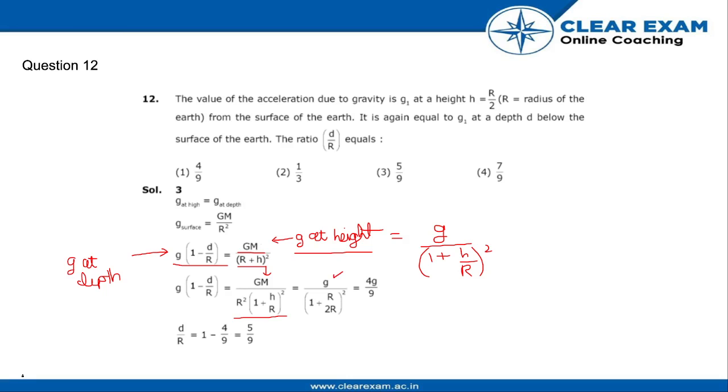h is equal to r by 2, so we will put in r by 2, which is equal to 4g by 9.